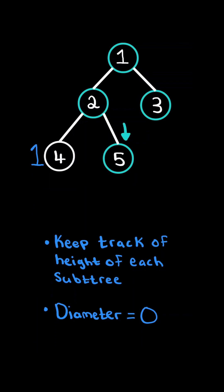Now let's consider the recursive step on node 5. It has no left or right subtree, and therefore there is no diameter on this subtree, and so we return the height of its subtree, which is 1.